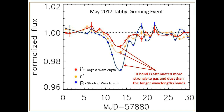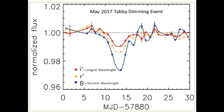If the material is totally solid, no light will penetrate it regardless of its wavelength, and there should be no differentiation between the light curves of the different filters. If the material is interstellar gas or dust, there will be a differentiation: the shorter wavelengths of light will attenuate or decrease more than the longer wavelengths — like what you see in this graph between the red curve (the longest wavelength) and the blue curve (the shortest wavelength).